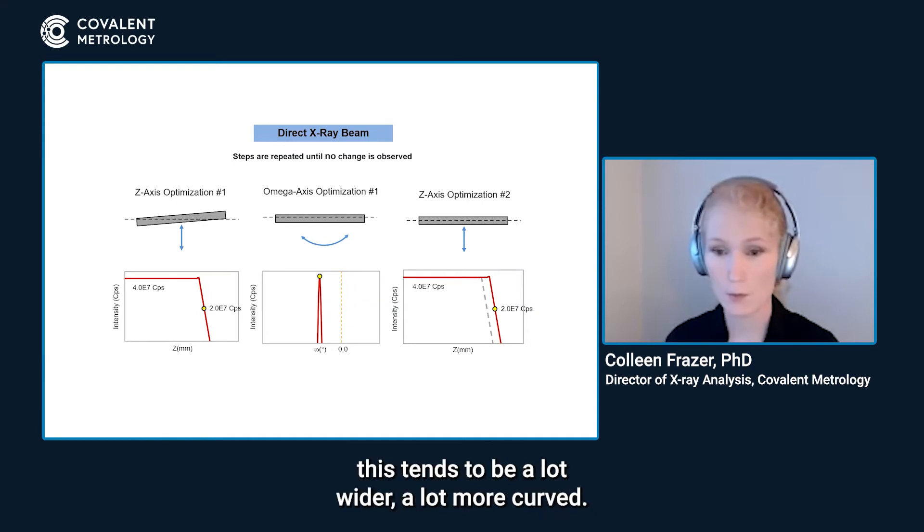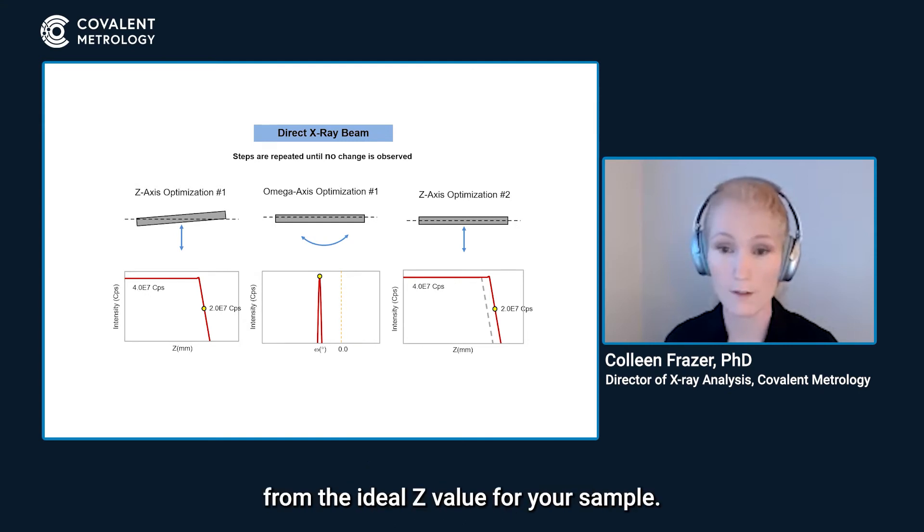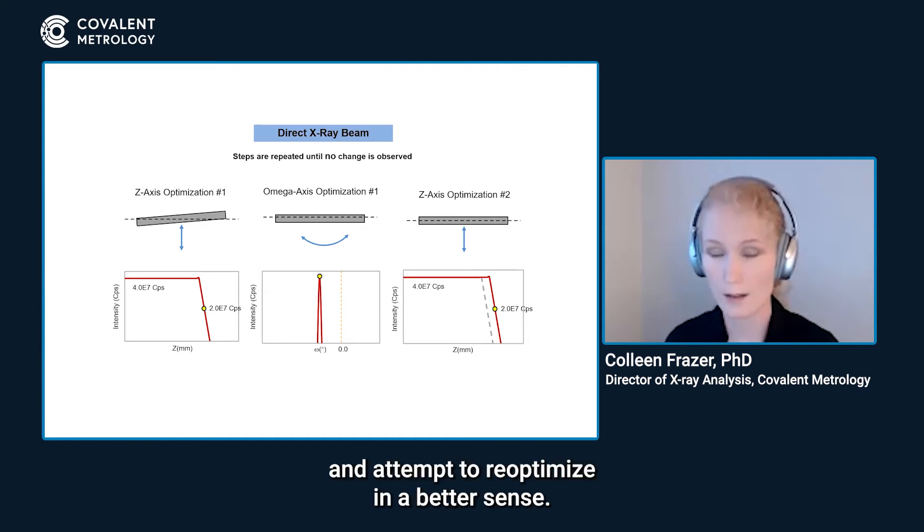If you have a lot of curvature in your sample, this tends to be a lot wider, a lot more curved. If this particular plot is sort of truncated at the top like a MESA, then it's likely that you're starting at a Z value that's significantly far off from the ideal Z value for your sample. If you continue to iterate the steps, you will achieve the right Z or you could go back and attempt to re-optimize in a better sense.